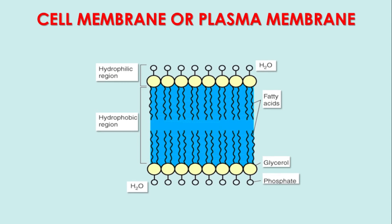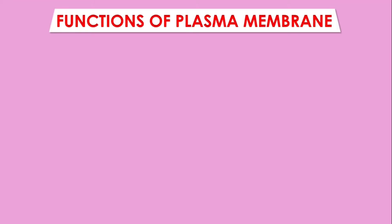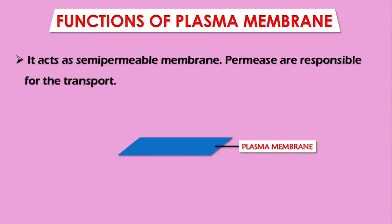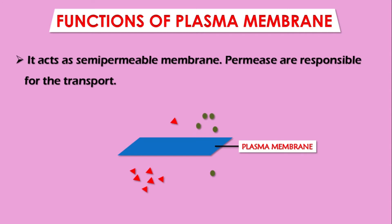Now let us come to the most important aspect: the functions of the plasma membrane or cytoplasmic membrane. One of the most important functions is that it acts as a semi-permeable membrane. The presence of permeases — enzyme permeases — are responsible for the transport of nutrients across the cytoplasmic membrane, allowing molecules to cross from outside to inside and from inside to outside.